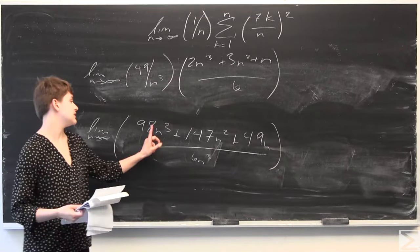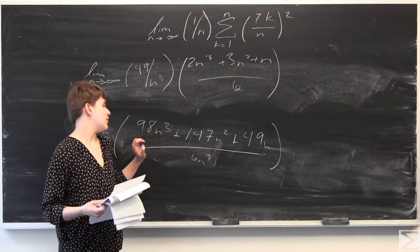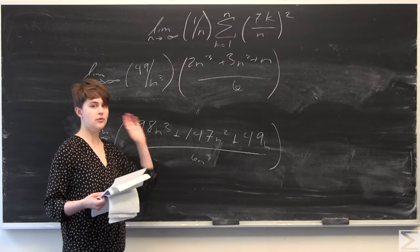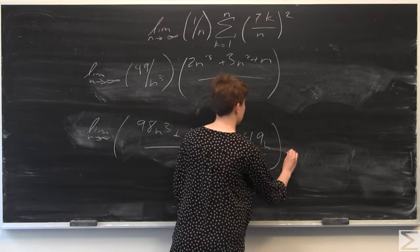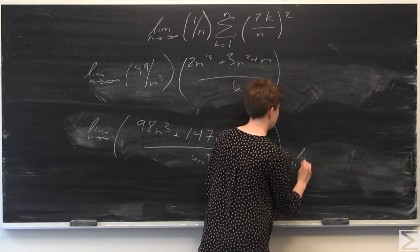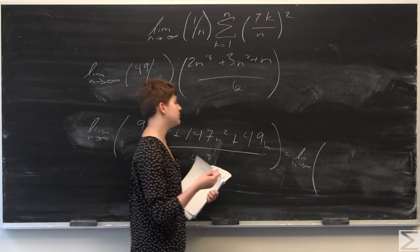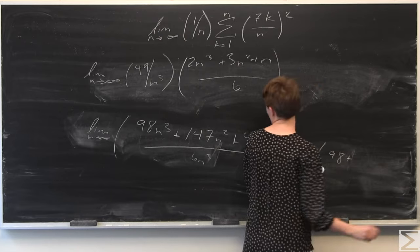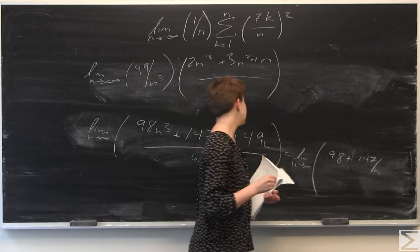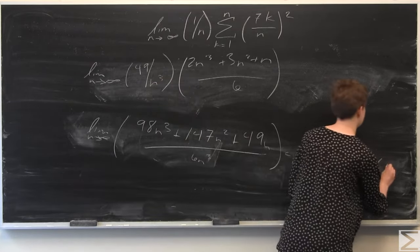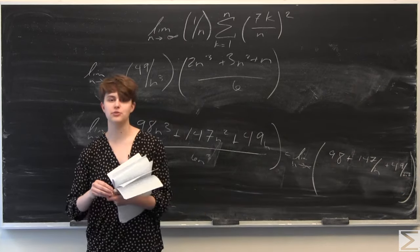So in order to take the limit, we can see we have a highest power of n cubed in the numerator and n cubed in the denominator. So we can divide the numerator and the denominator — or equivalently, multiply both by 1 over n cubed. So 98n cubed divided by n cubed is just 98. 147n squared divided by n cubed is 147 over n. And 49n divided by n cubed is 49 over n squared. And finally in the denominator, 6n cubed divided by n cubed is 6.